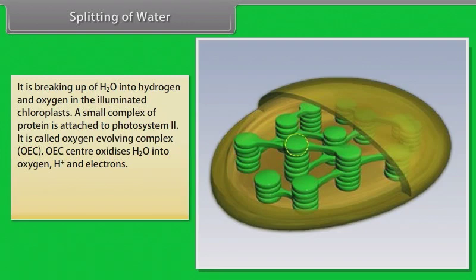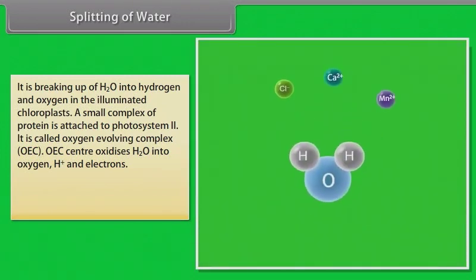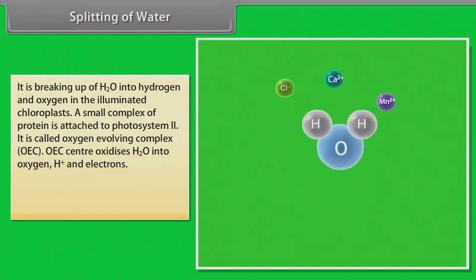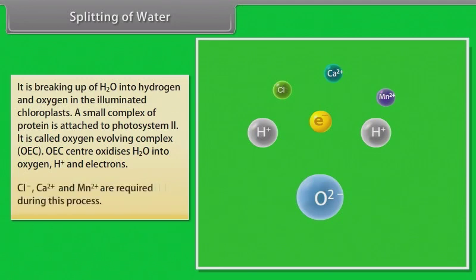Splitting of water is the breaking up of H2O into hydrogen and oxygen in the illuminated chloroplast. A small complex of proteins attached to Photosystem 2 is called the oxygen-evolving complex (OEC). The OEC center oxidizes H2O into oxygen, H+, and electrons. Cl−, Ca2+, and Mn2+ are required during this process.